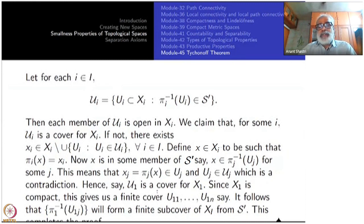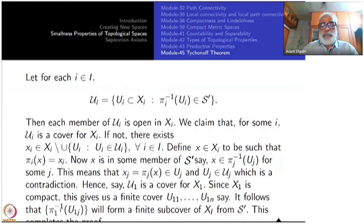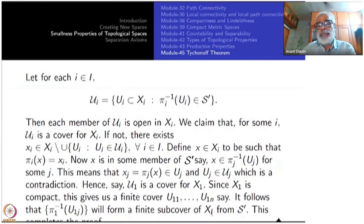Therefore, at least one of the U_i's covers the whole Xi. Say U_1 covers X_1. Since X_1 is compact, this gives a finite subcover U_{11}, ..., U_{1n}. It follows that P_1-inverse of U_{1j} for j = 1, ..., n forms a finite subcover for X from S-prime. These are members of S-prime, and since X_1 is the union of these sets, P_1-inverse of all these things covers the whole product Xi. That completes the proof.